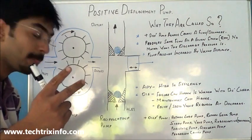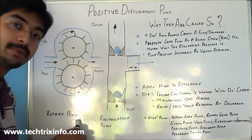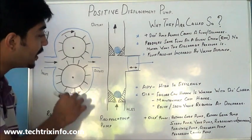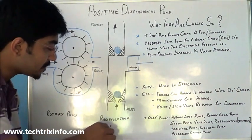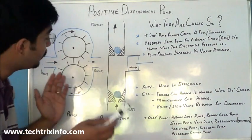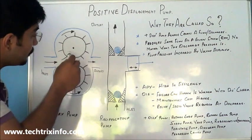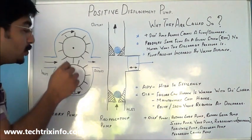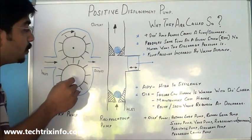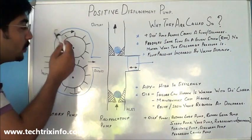Generally, positive displacement pumps can be classified into two types: the first is a rotary type pump and the other is a reciprocating type pump. Now let's look at the rotary type pump — it has two gears: one is the driving gear and the other is the driven gear.